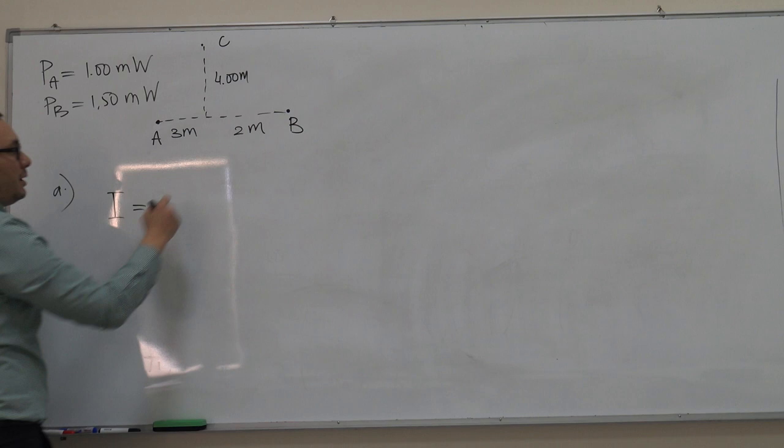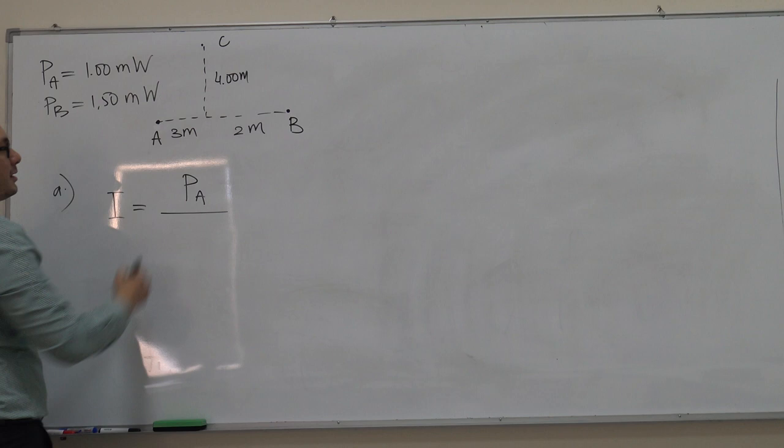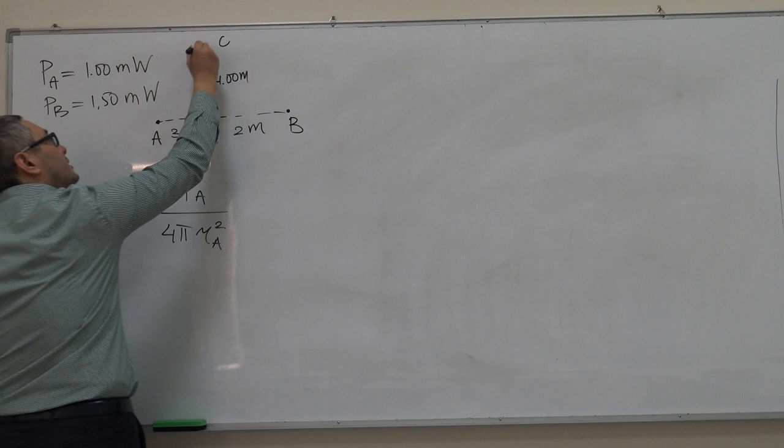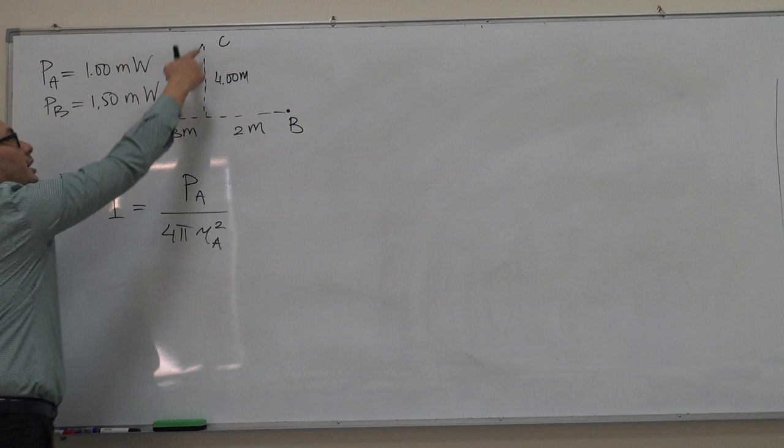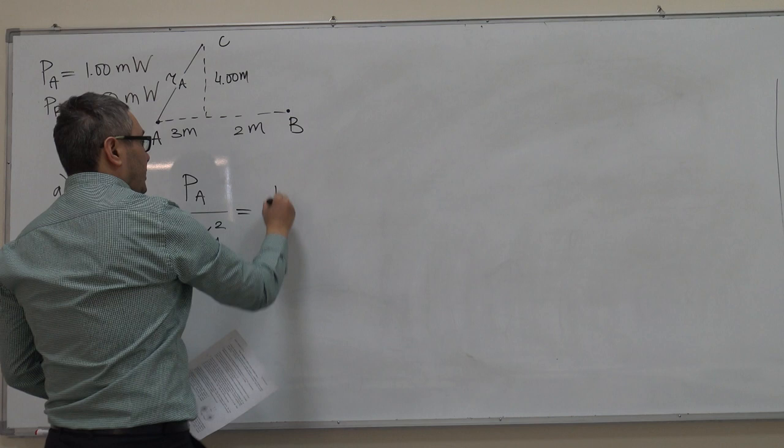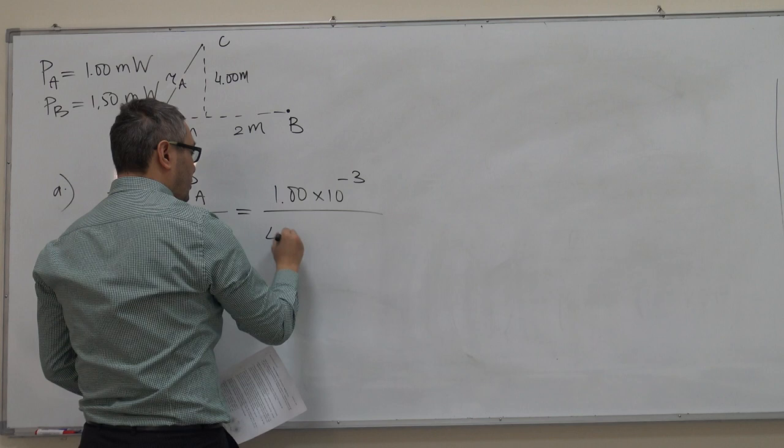That would be power generated by source A divided by 4π R_A squared, where R_A is this distance. In other words, power divided by the surface area of the imaginary sphere of radius R_A. So let's go ahead and document that. That's one times 10 to minus three, 4π. Using the Pythagorean theorem, you can say that R_A is equal to square root of three squared plus four squared, but then we take the square again.